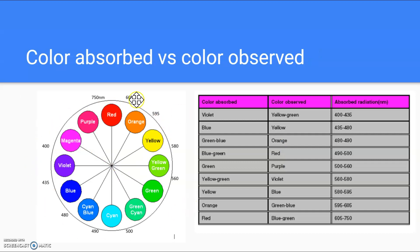So solutions that are clear do not absorb in the visible light range. So all of the light goes through and it looks clear to the eye. But if a solution absorbs something in the visible range, one of these colors, then that color doesn't reach your eye. And you see, instead of white, you see a color. And what color do you see? Well, that depends on what color is absorbed.